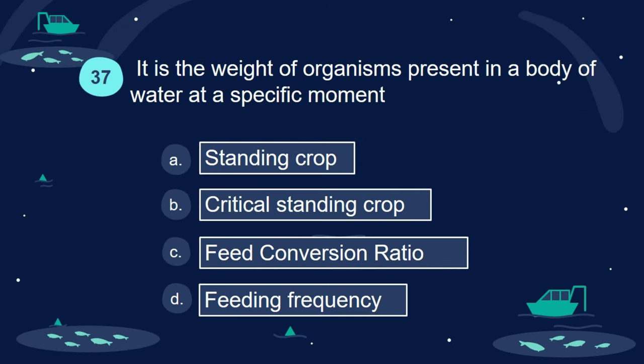Question 37. It is the weight of organisms present in a body of water at a specific moment: A. Standing crop. B. Critical standing crop. C. Feed conversion ratio. D. Feeding frequency.